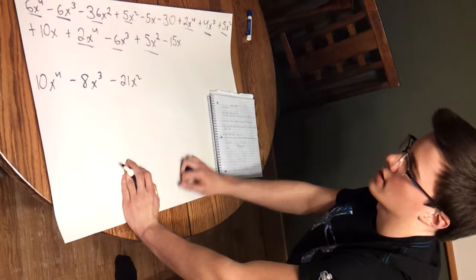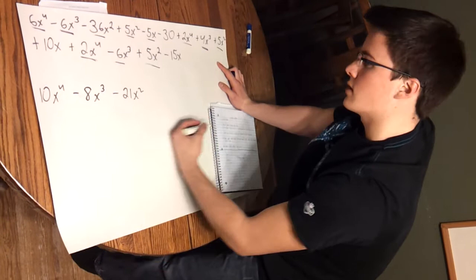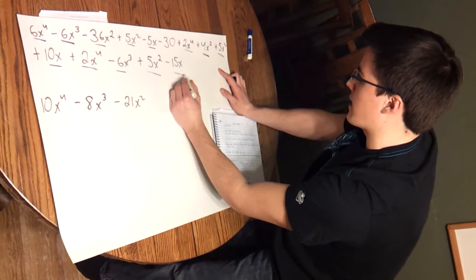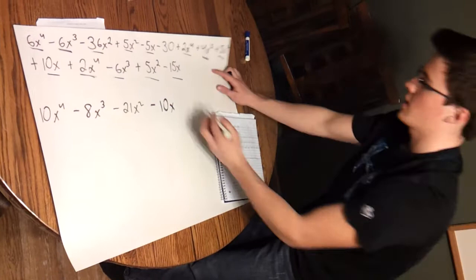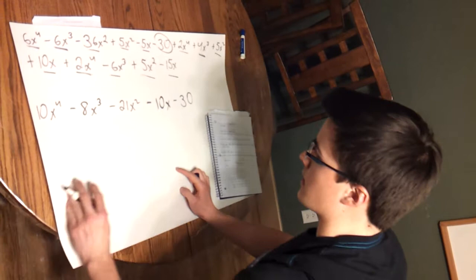And now we're just going to combine any terms with just an x in it. So we have a negative 5x, a 10x, and a negative 15x. When you combine all those together you'll get a negative 10x. And finally, the only constant we have is negative 30. So you just tag it onto the end.